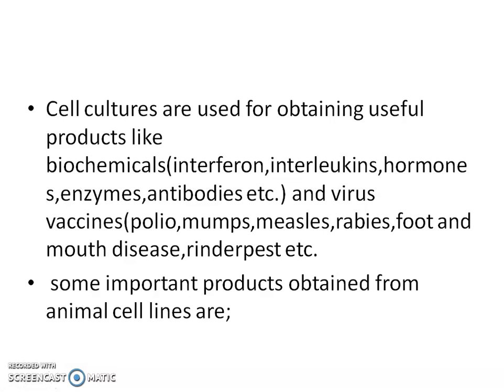In cell cultures, you use it when you want valuable products like biochemicals such as interferon, interleukins, hormones, enzymes, and antibodies. All of these biochemicals, along with virus vaccines like polio, mumps, measles, rabies, foot and mouth disease, and rinderpest, are available from cell cultures. It is important to know how to prepare these vaccines.